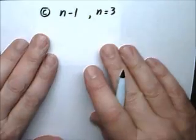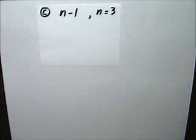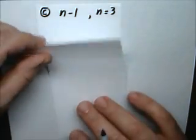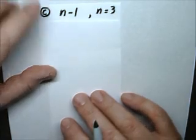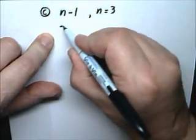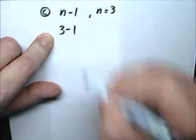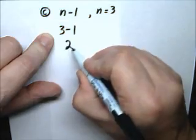Example C is subtraction this time. It's N minus 1, and you have to think of a 3 for the N. So, this becomes 3 minus 1, and 3 minus 1 is 2.